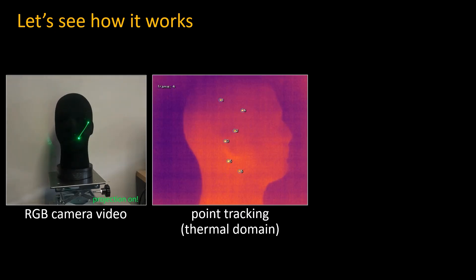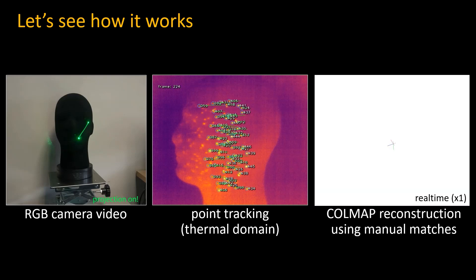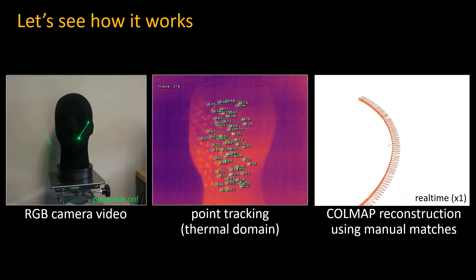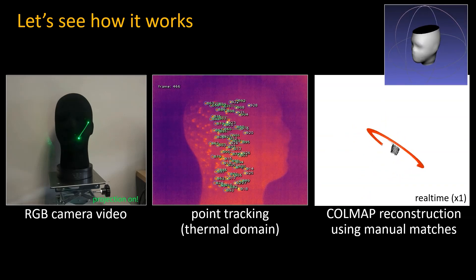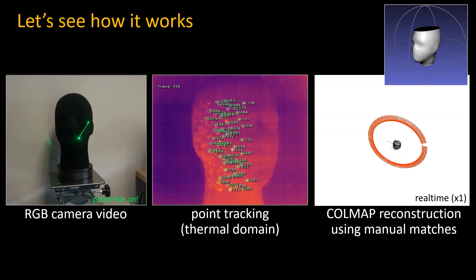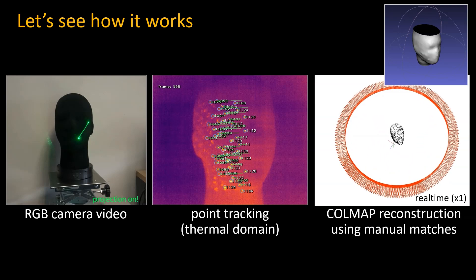Let's see an example. In this experiment we scan a mannequin head placed on a rotating stage. The head is made of a dark and textureless material whose features are really hard to make out with a regular camera. But in the thermal domain our laser creates trackable heat points on the object surface. After tracking we can manually feed the point matches into Colmap and compute the camera motion and a sparse model of the scene's geometry. As you can see our method generates accurate point matches which allow Colmap to recover the circular camera motion around the object.